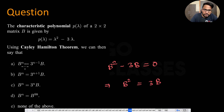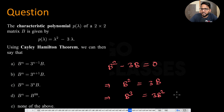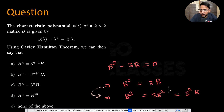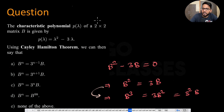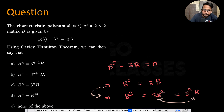To find B^n, start from B^2 = 3B. Multiply both sides by B: B^3 = 3B^2, and since B^2 = 3B, we get B^3 = 3^2 * B. Multiplying again: B^4 = 3^2 * B^2 = 3^3 * B. A pattern emerges: B^2 = 3B, B^3 = 3^2 * B, B^4 = 3^3 * B.